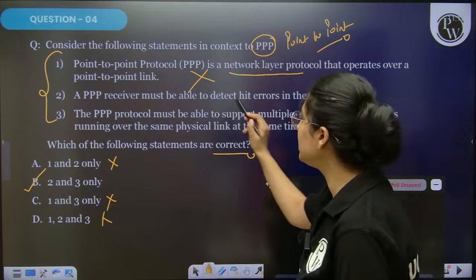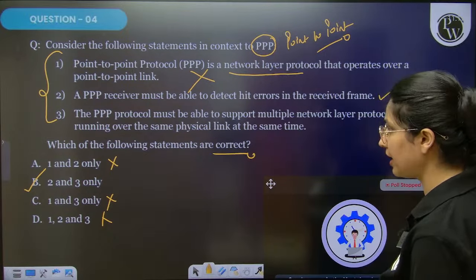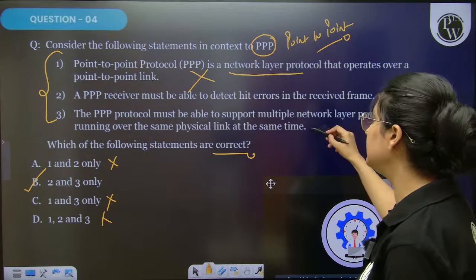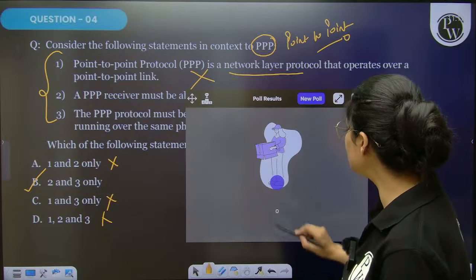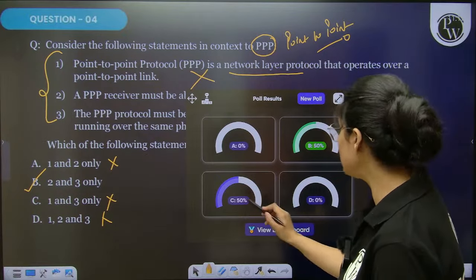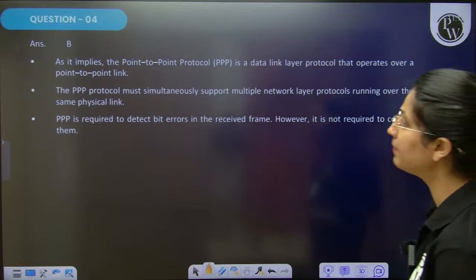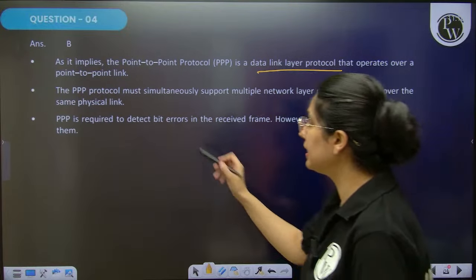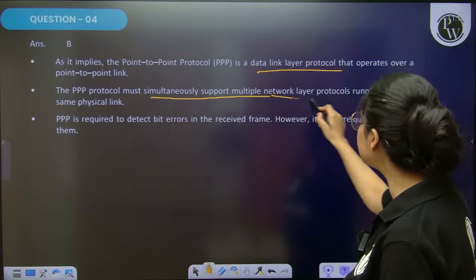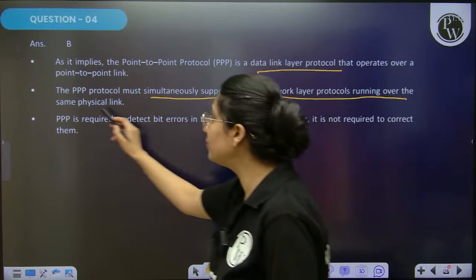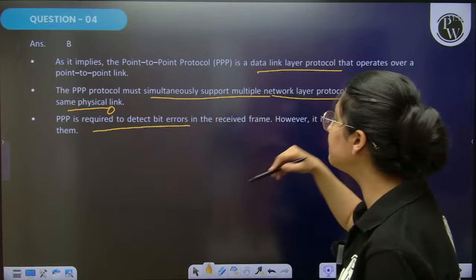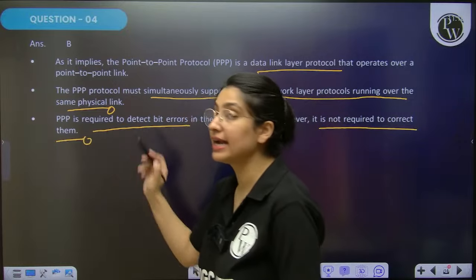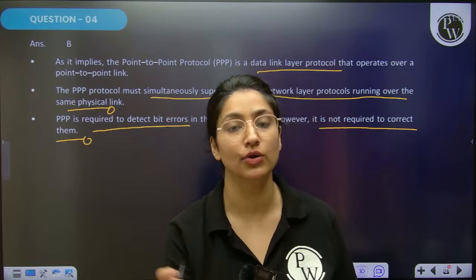PPP receiver must be able to detect bit errors in the receiver's frame. PPP protocol must be able to support multiple network layer protocols running over the same physical link at the same time — absolutely correct. These two statements are right. 50% of the audience chose option C. PPP protocol is a data link layer protocol that operates over a point-to-point link. It must simultaneously support multiple network layer protocols. It requires detecting bit errors in the receiver frame but does not require correcting them — it is only detecting.